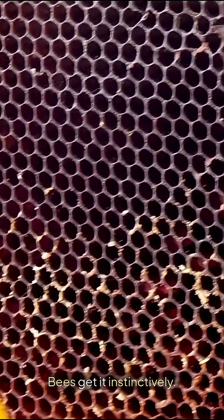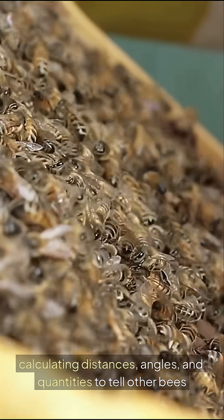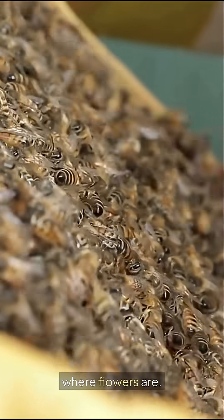Bees get it instinctively, and they use this for navigation and communication. They're calculating distances, angles, and quantities to tell other bees where flowers are.